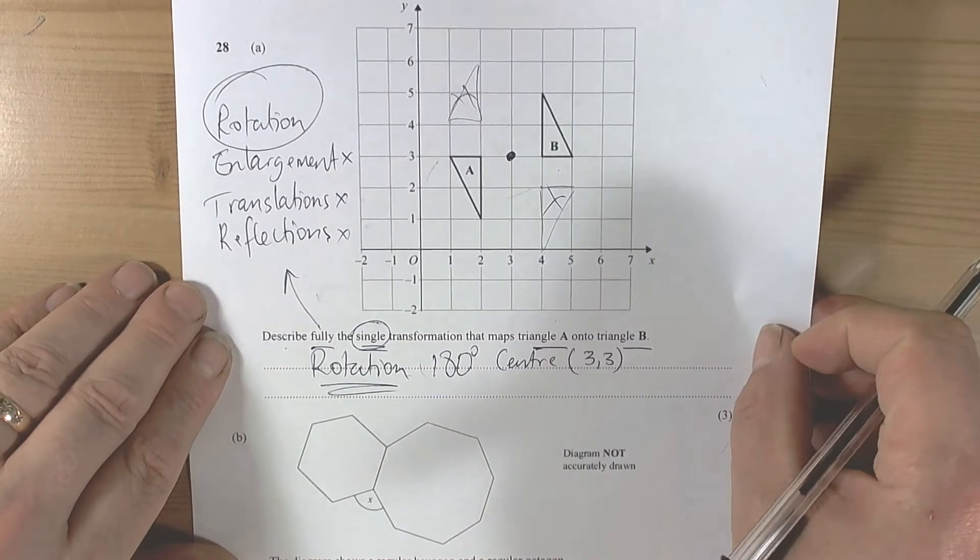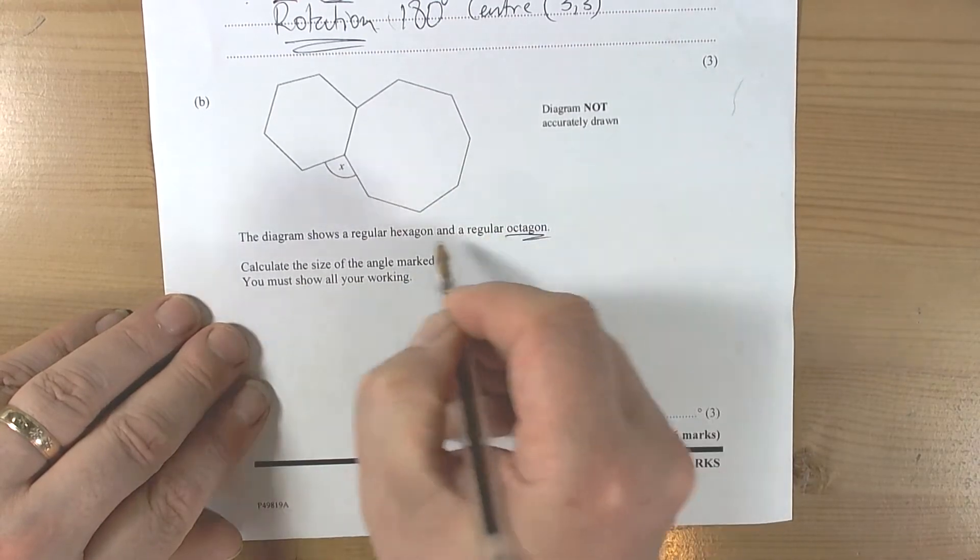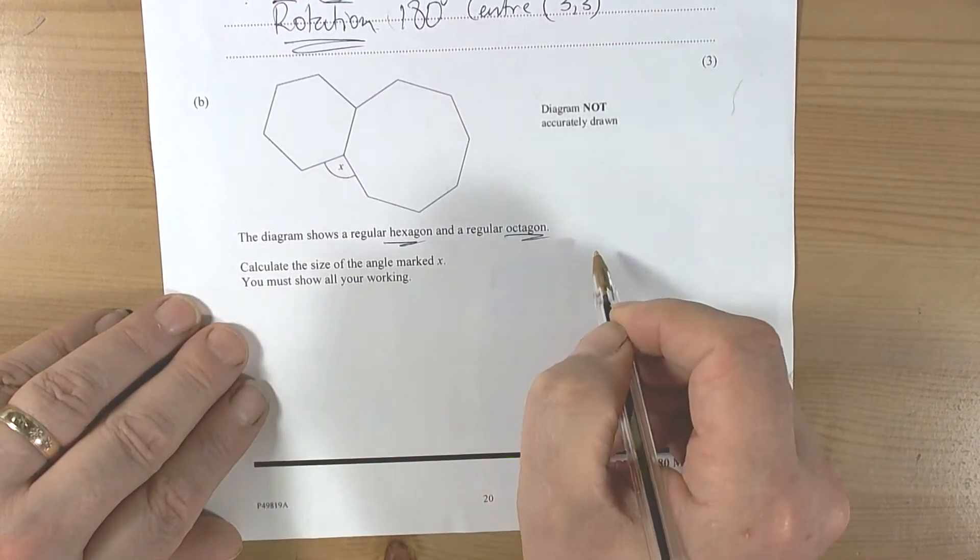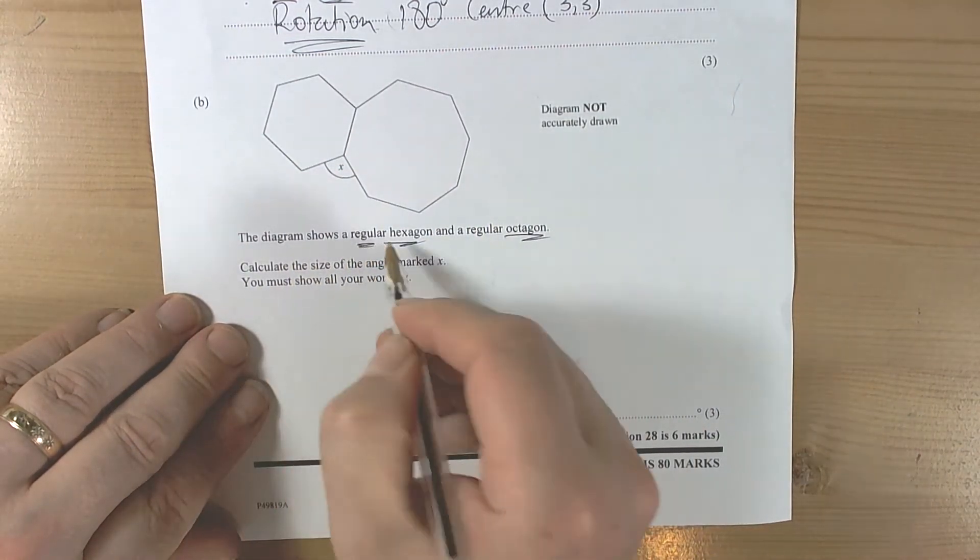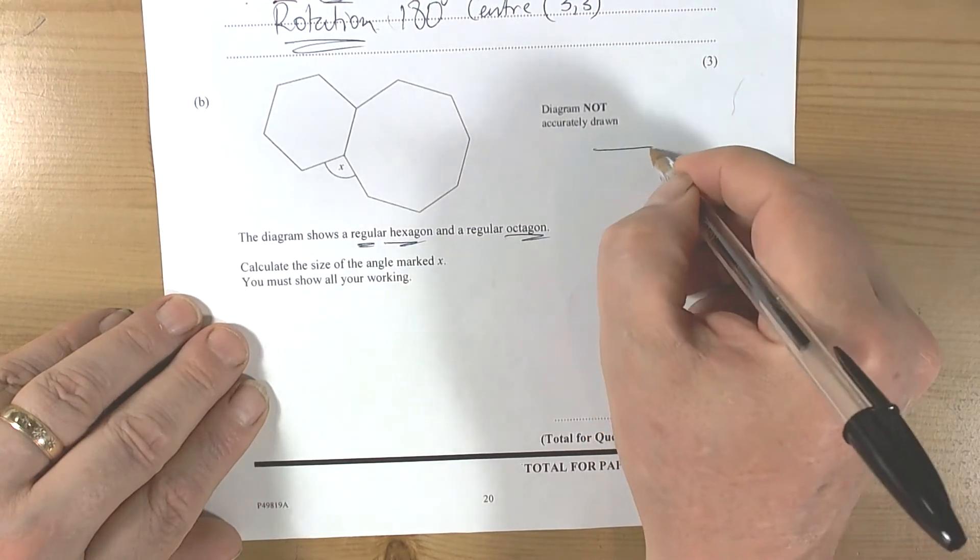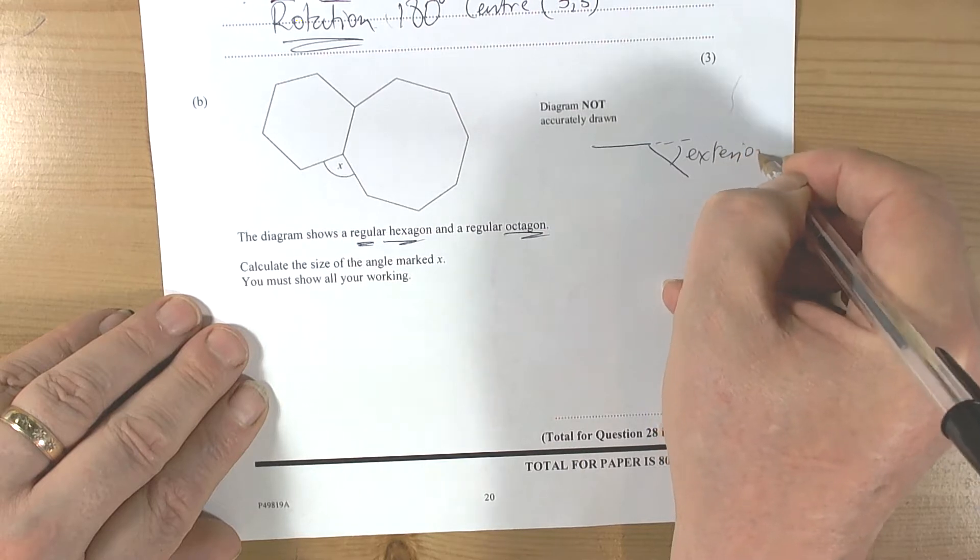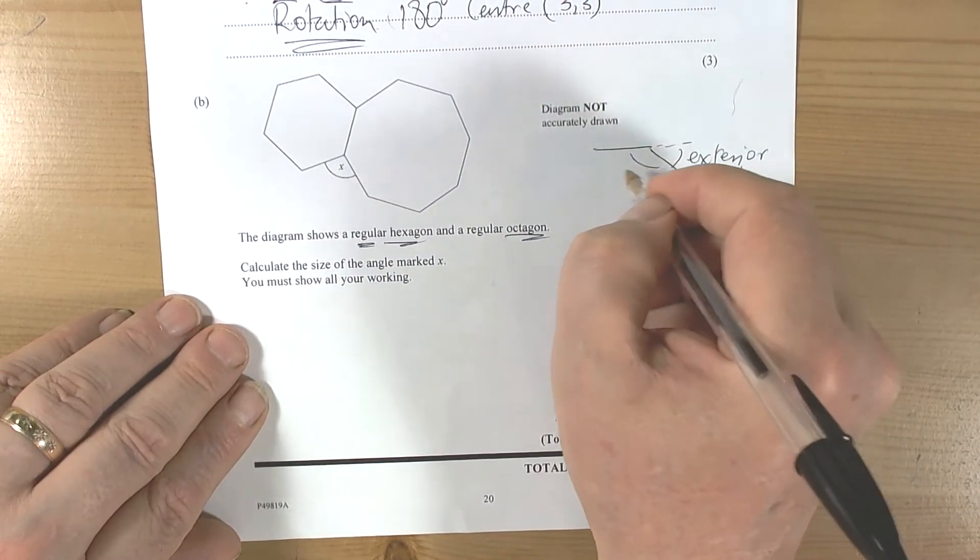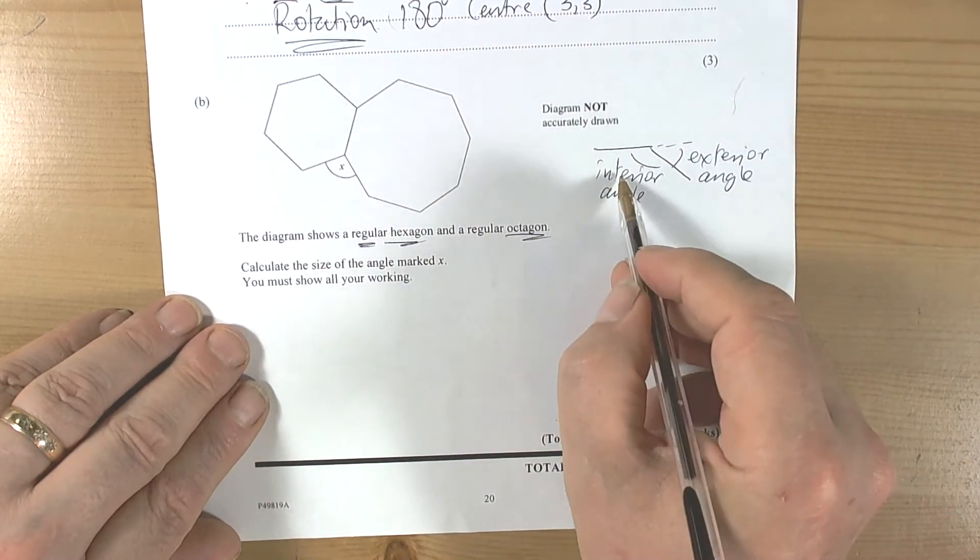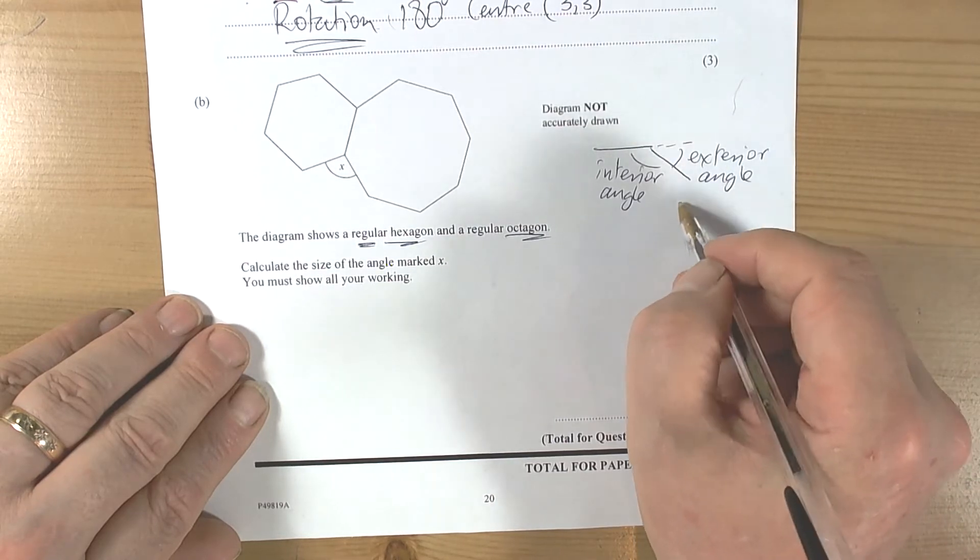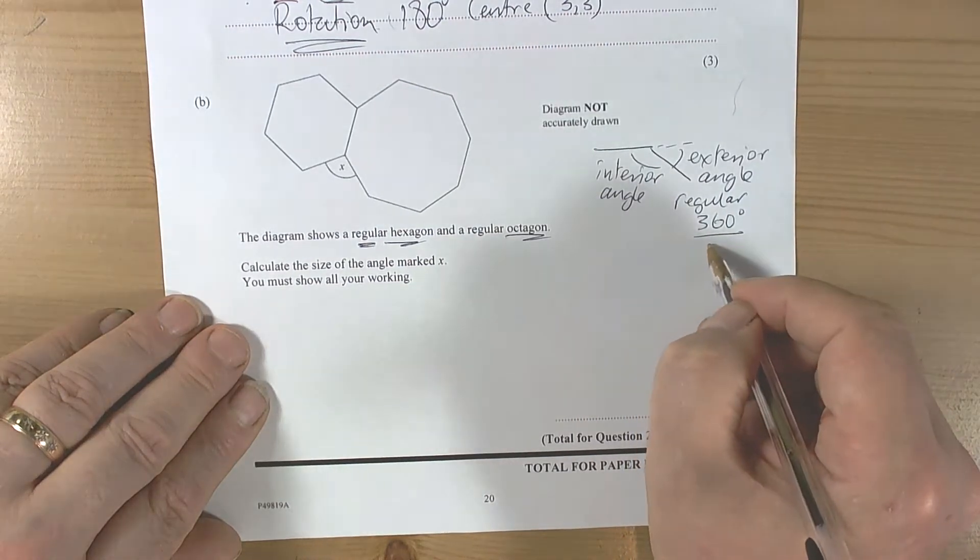This question talks about polygons - hexagons and octagons. Polygons are straight-sided shapes, and it's talking about regular polygons. We should be thinking of exterior angle and interior angle, and both of these for a polygon would add up to 180 degrees. The exterior angle for a regular polygon is always 360 degrees divided by n, where n is the number of sides.